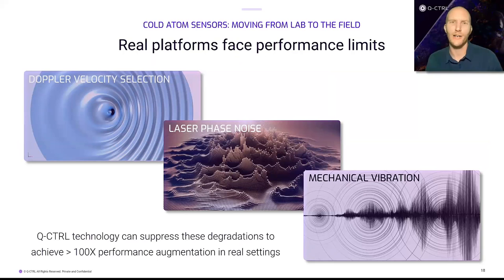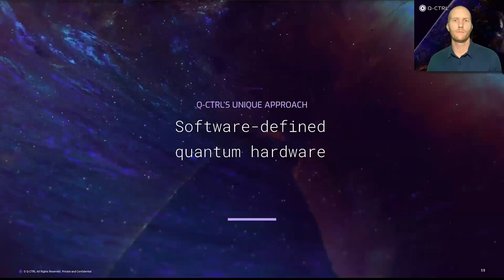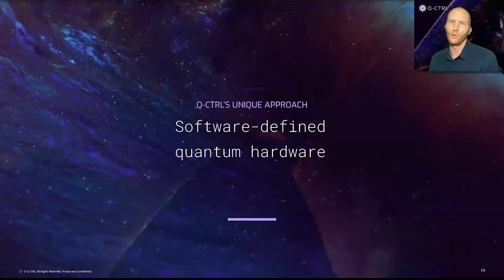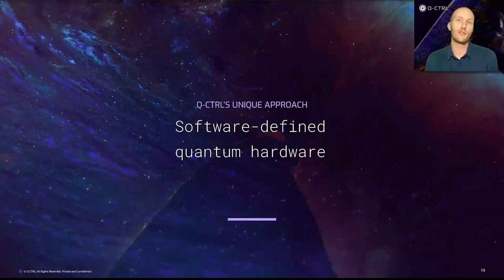In quantum sensors based on the interaction between atoms and light, degrading effects include the Doppler shift from different atomic velocities, phase noise on the lasers used to control the atoms, and mechanical vibration inherent to moving vehicles. Q-Control's technology can suppress these degradations to make quantum sensors more performant in real-world conditions. Rather than trying to improve hardware alone by adding shielding or making it more mechanically robust, an alternative approach puts software first — software-defined quantum hardware — empowering quantum sensors to be reconfigurable, autonomous and capable of learning about their own environment.